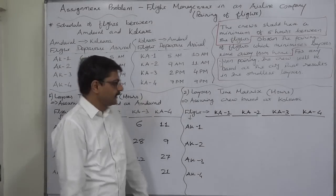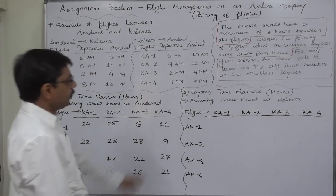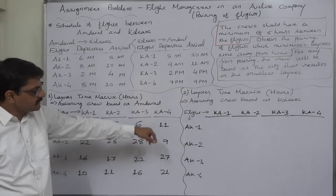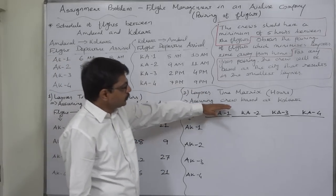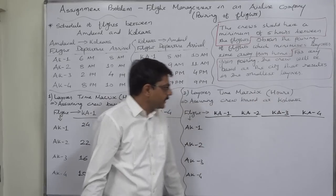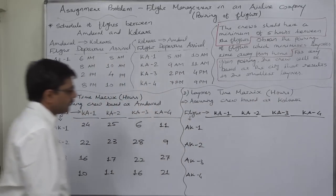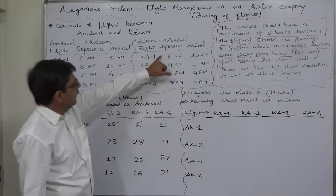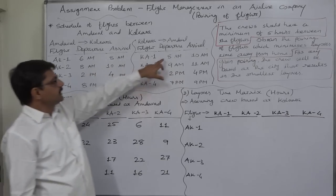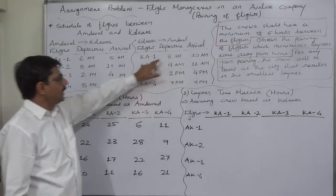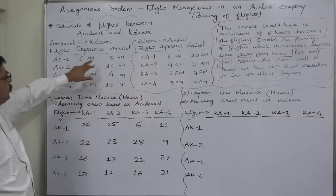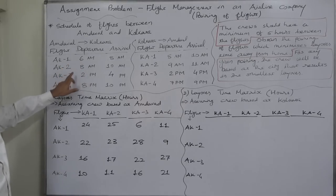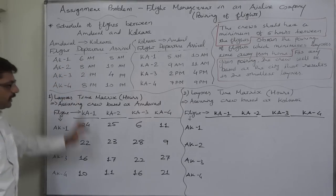Hello and welcome back. This is Labor Time Matrix number two — labor time in us. We are going to assume the crew is based at Kolkata. We will think that KA1 reaches from Kolkata to Ahmedabad and then becomes either KA1, KA2, KA3, or KA4.